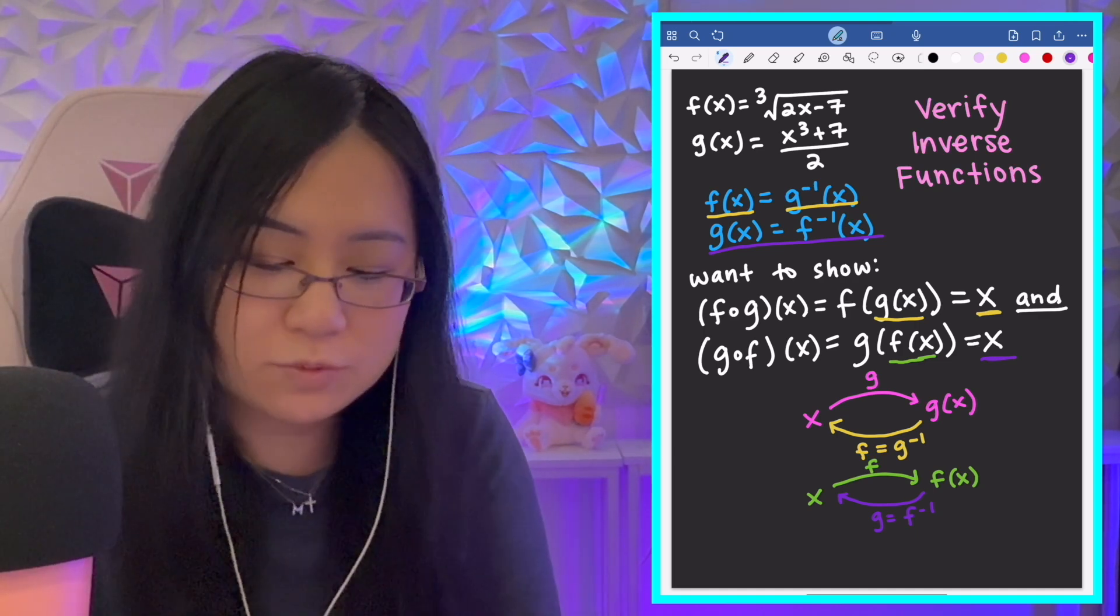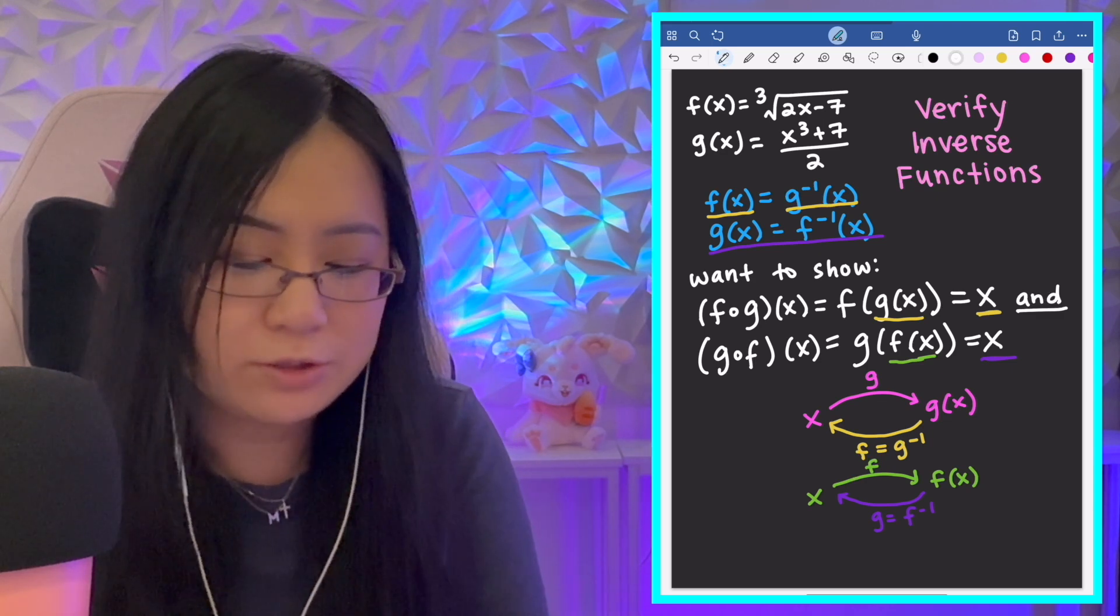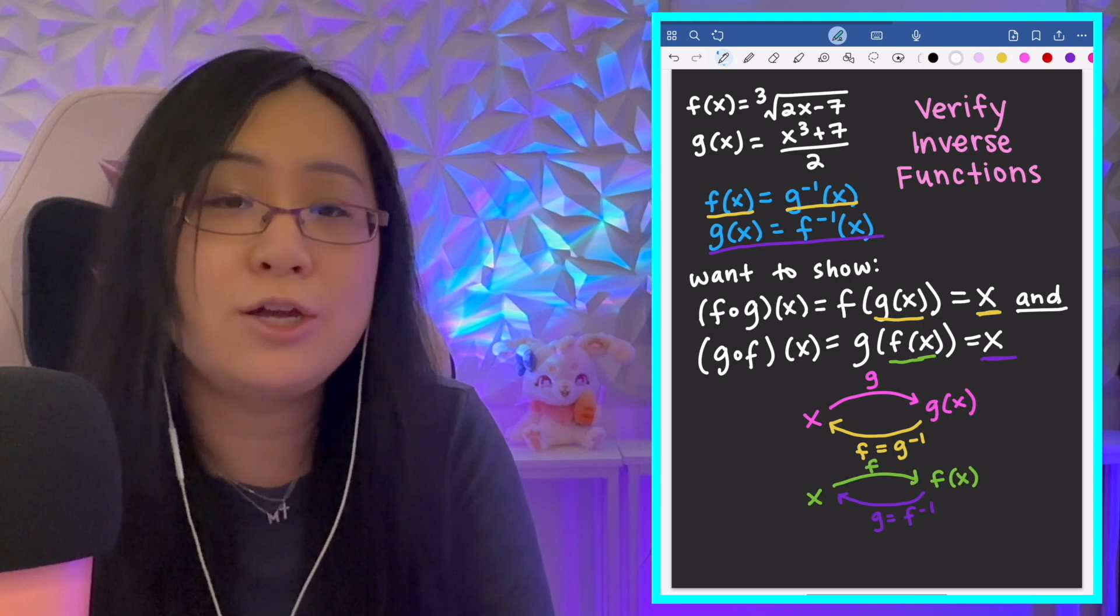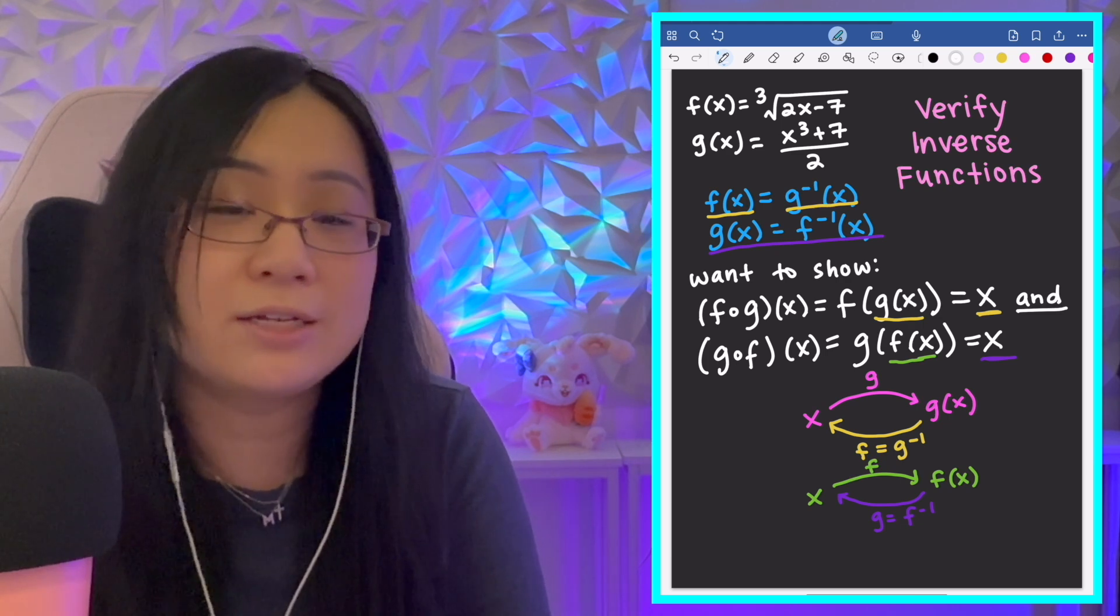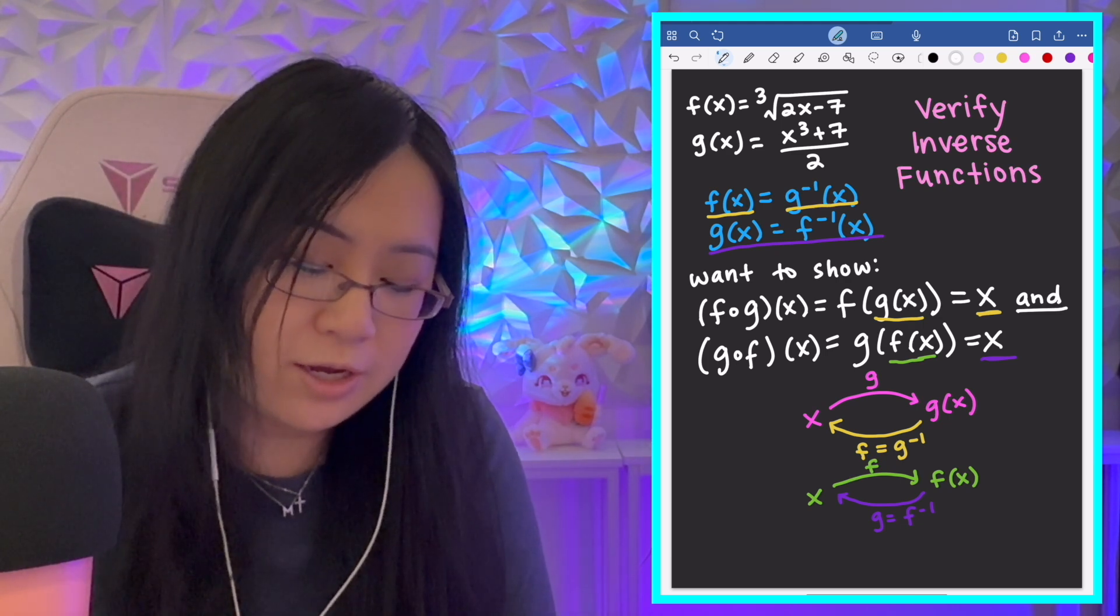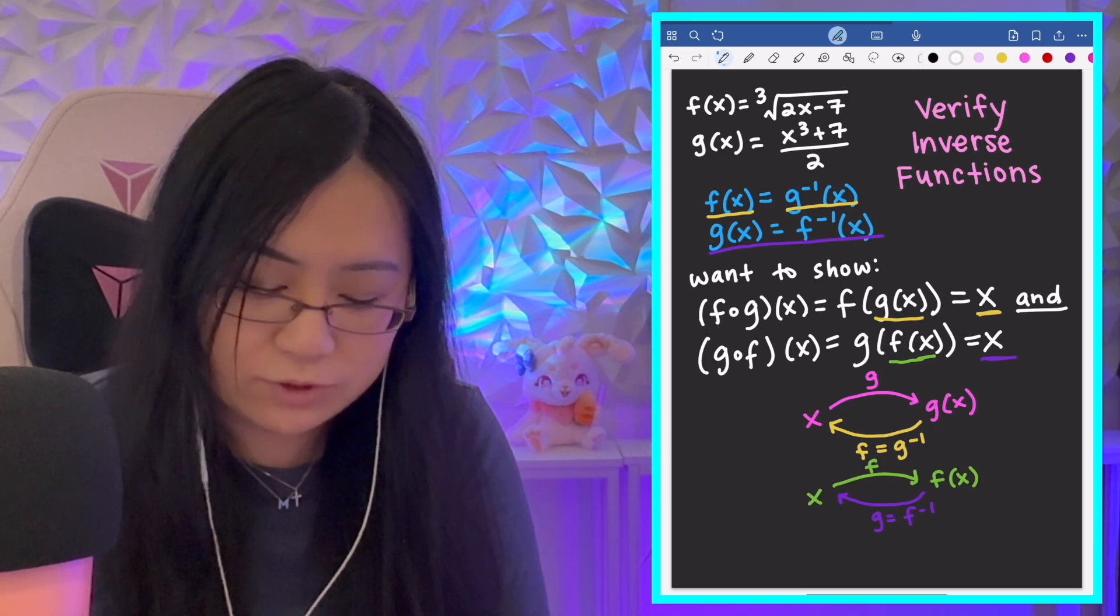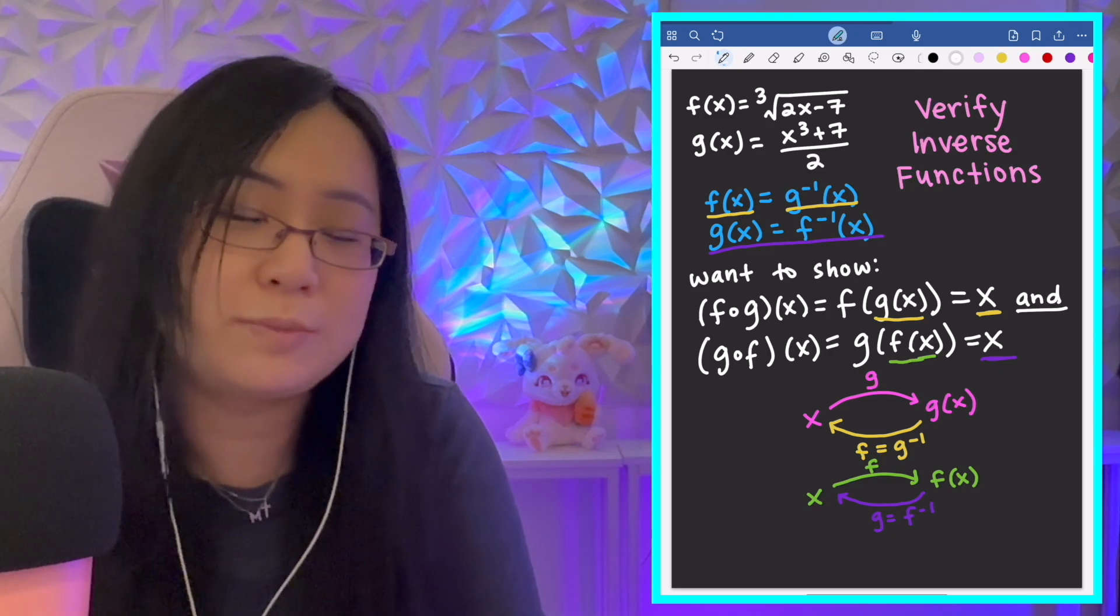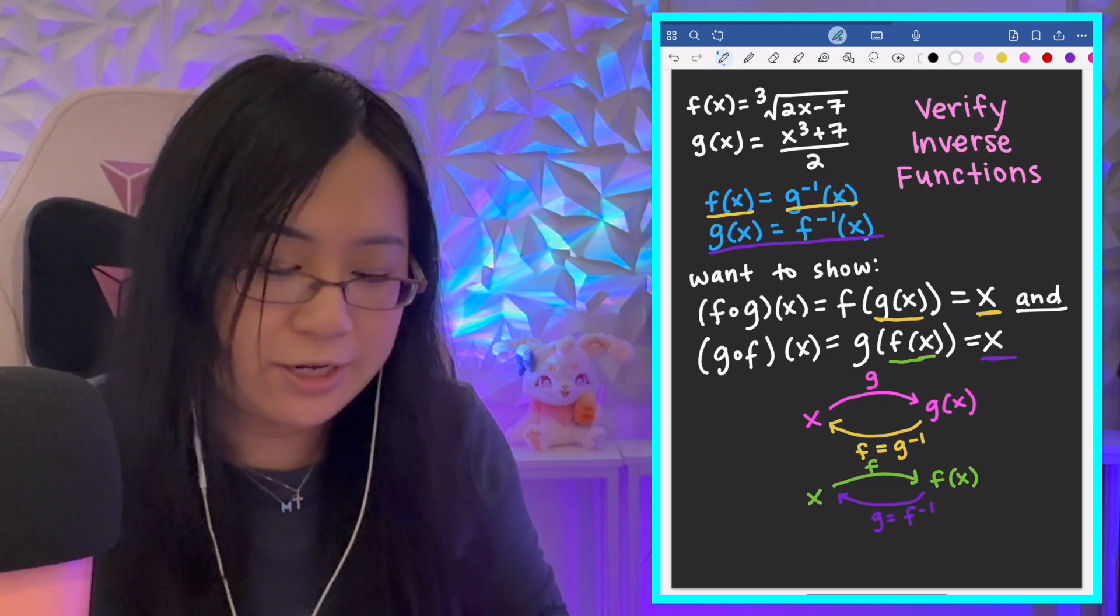But if you just want a quick summary of what to do, just go ahead and do the compositions. Do f(g(x)). Show that that equals x and that g(f(x)) equals x. But this is kind of what's going on behind the scenes. It should undo the function, so to speak. It inverts it, or is the inverse.